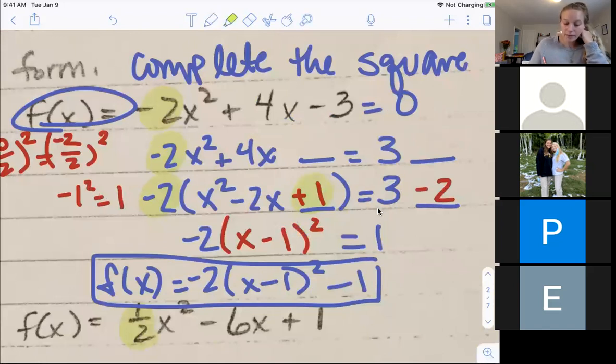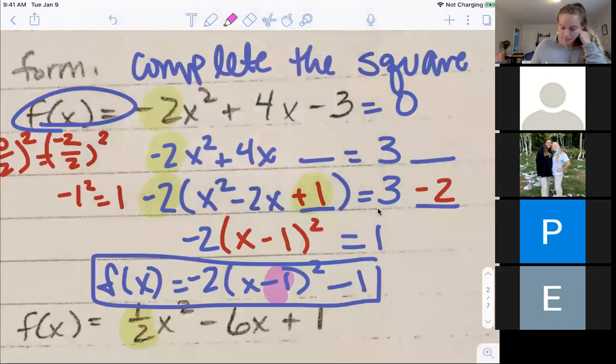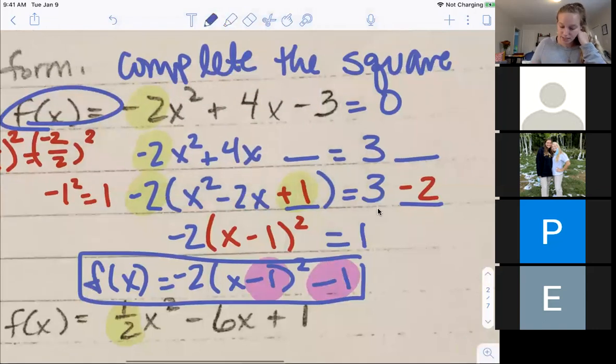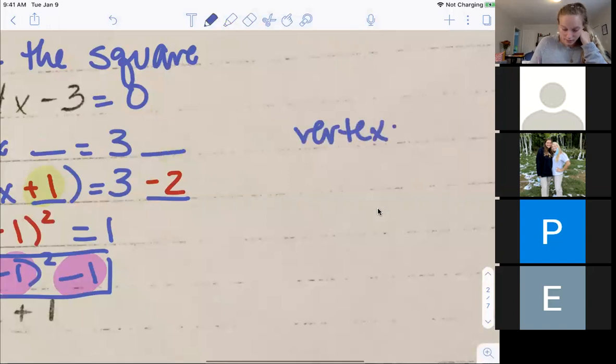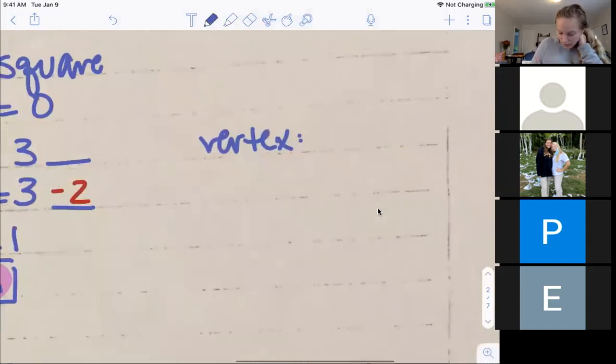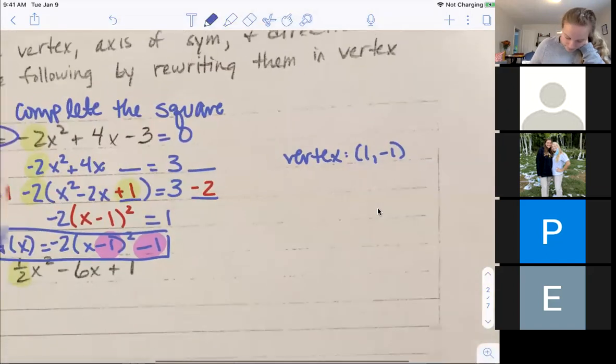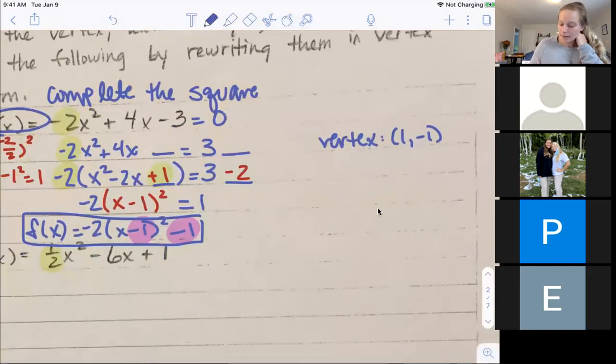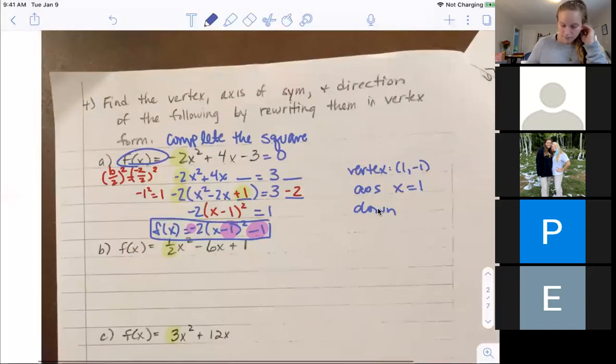I've finished completing the square, and I finished writing it in vertex form. I have my h and k. Here's my h, here's my k. Remember, my h switches signs. So my vertex is going to be positive 1, negative 1. My axis of symmetry is my x value, so x equals positive 1. And since it had a negative in front of my 2, it's going down.